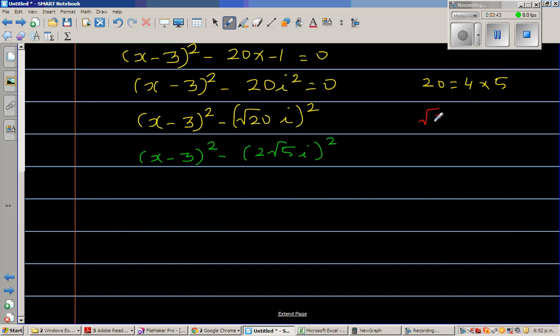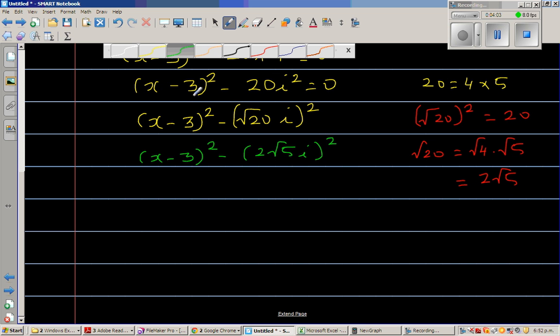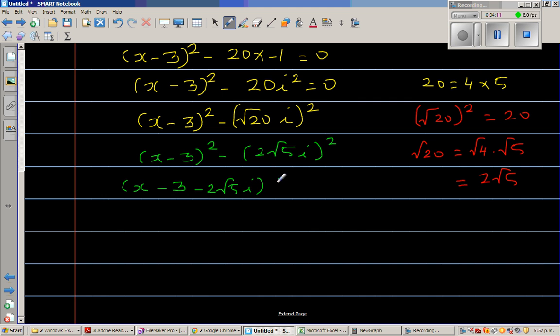√20 is √4 times √5, and √4 is 2, so this is 2√5. So let me bring back my green color. This is (x - 3 - 2√5 i) and (x - 3 + 2√5 i) equal to 0. So now if you set both of them equal to 0...